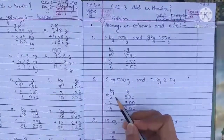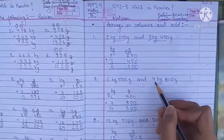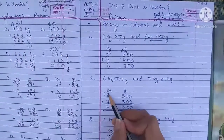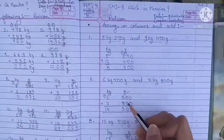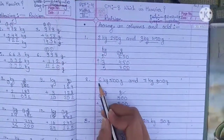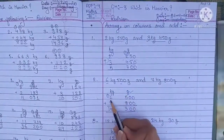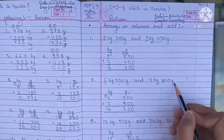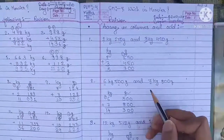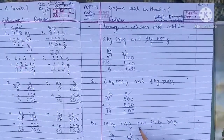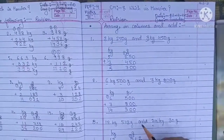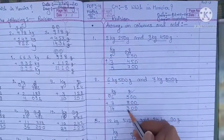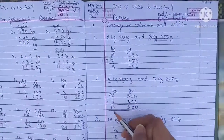Second question: 6 kilograms 500 grams and 7 kilograms 800 grams. We write units — kilogram and gram — and arrange in columns. Adding: 0 plus 0 is 0, 0 plus 0 is 0, 5 plus 8 is 13, so 3 and carry 1. Then 1 plus 6 plus 7 is 14.